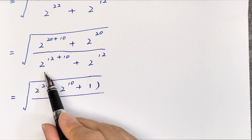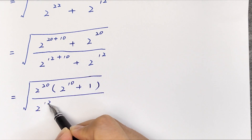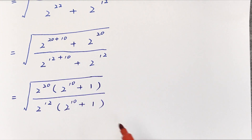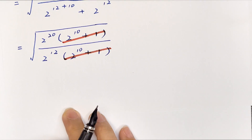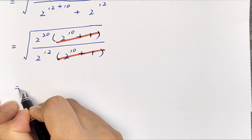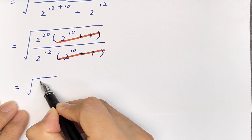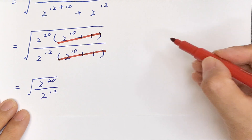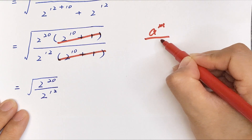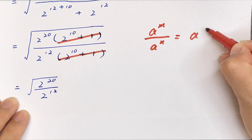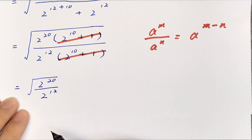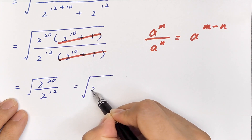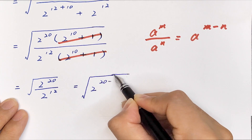In the denominator, we take 2 to the power of 12 out of the bracket: 2 to the power of 12 times (2 to the power of 10 plus 1). The (2 to the power of 10 plus 1) cancels, so it equals the square root of 2 to the power of 20 divided by 2 to the power of 12. Applying the formula a^m divided by a^n equals a to the power of m minus n.